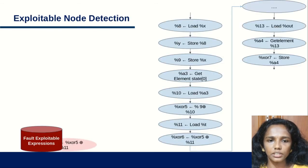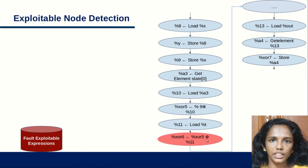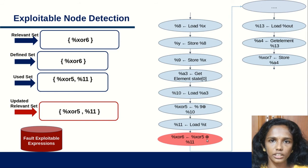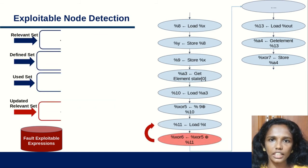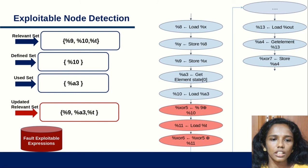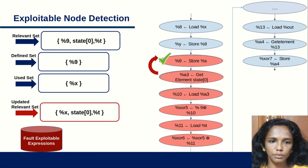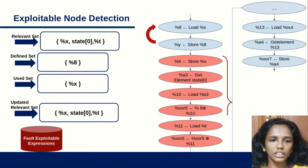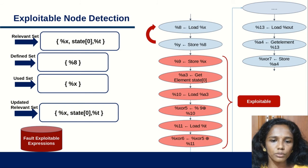We have the control flow graph with marked exploitable expressions. We use the exploitable node detection module to determine all exploitable instructions by performing backward data flow analysis on the control flow graph. Using three sets — relevant set, define set, and use set — we trace the relevant variables. Nodes that can influence the result of the relevant set are marked as exploitable; those that do not are marked as unexploitable. From this graph, the last node is unexploitable and all other nodes that can influence the relevant set are exploitable.